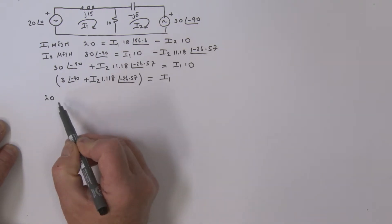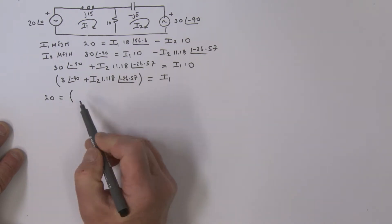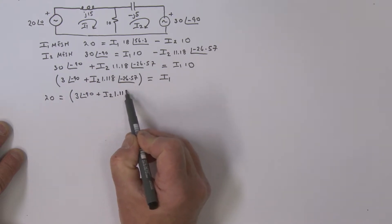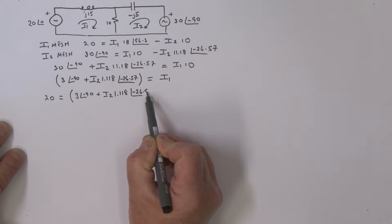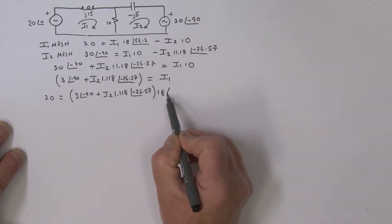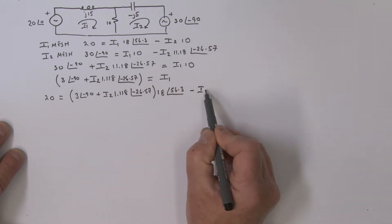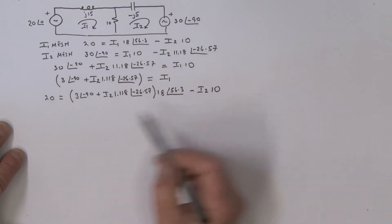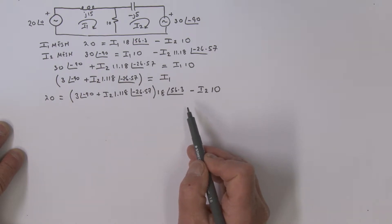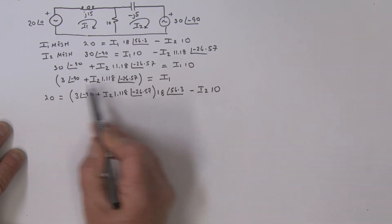So we have 20, and that is going to be equal to i1. Let's put a bracket here: we have 3 at angle minus 90 plus i2 times 1.118 at angle minus 26.57 — that is i1 — and i1 is multiplied by 18 at an angle of 56.3, and then minus i2 times 10. We've now got everything in this equation in terms of i2, and that's what we're going to solve for.